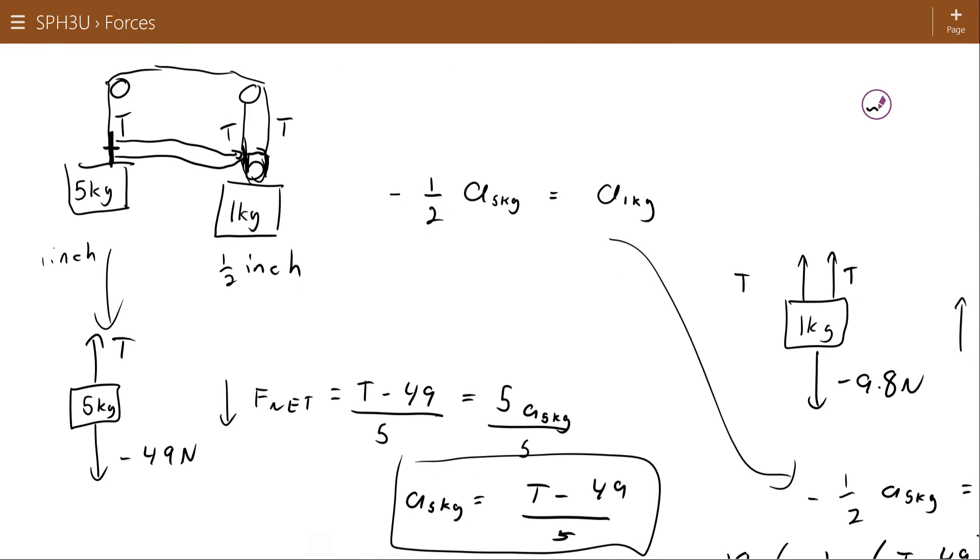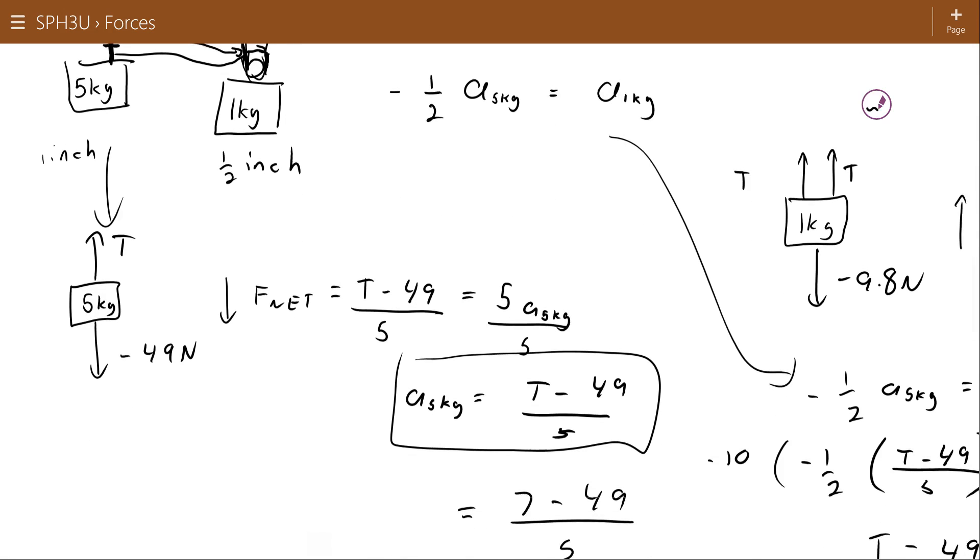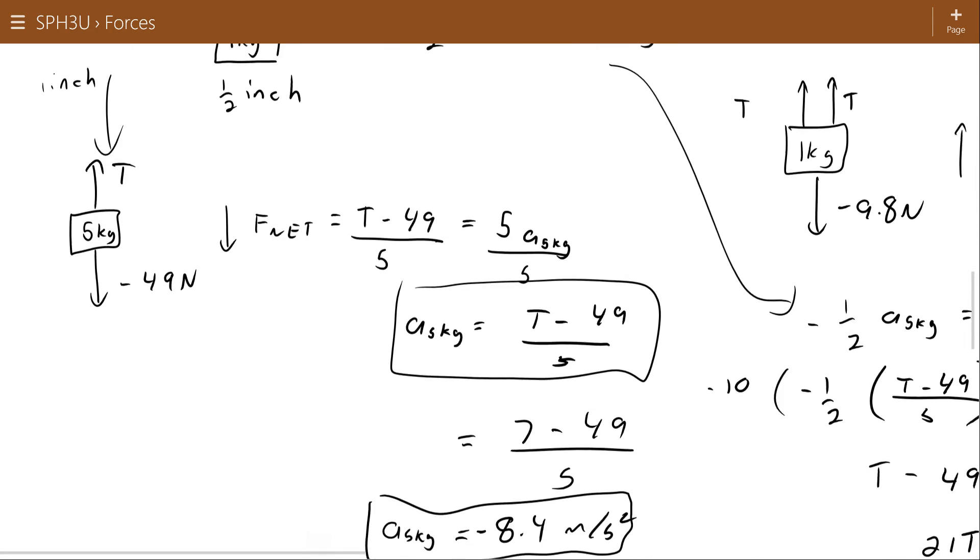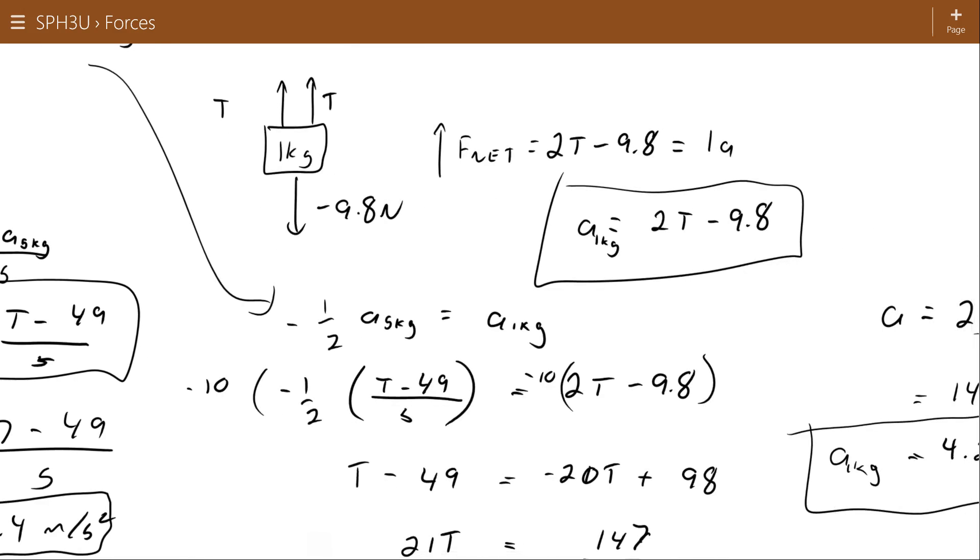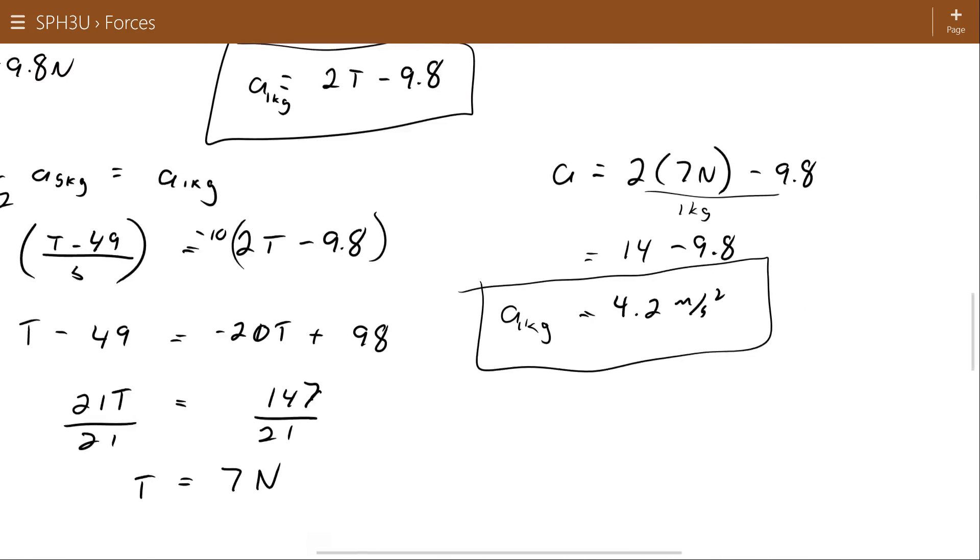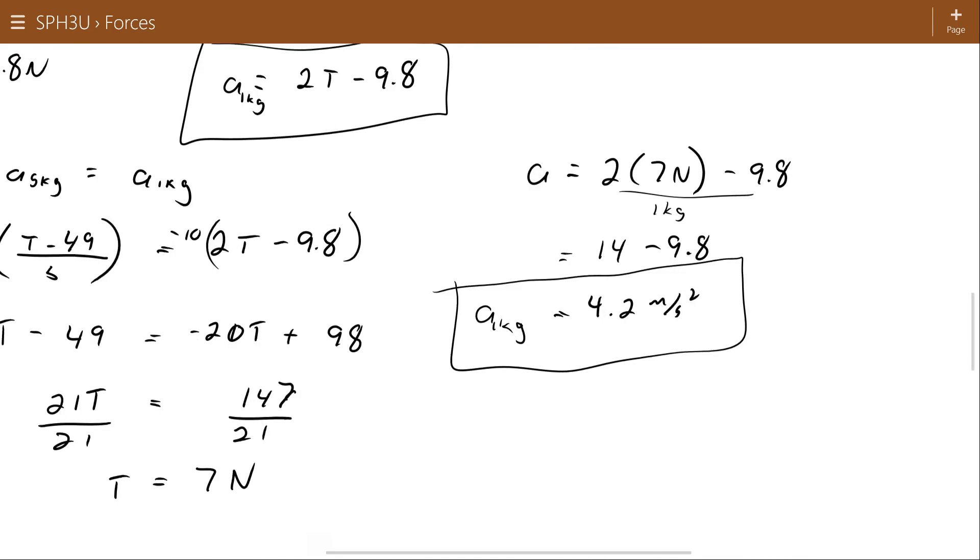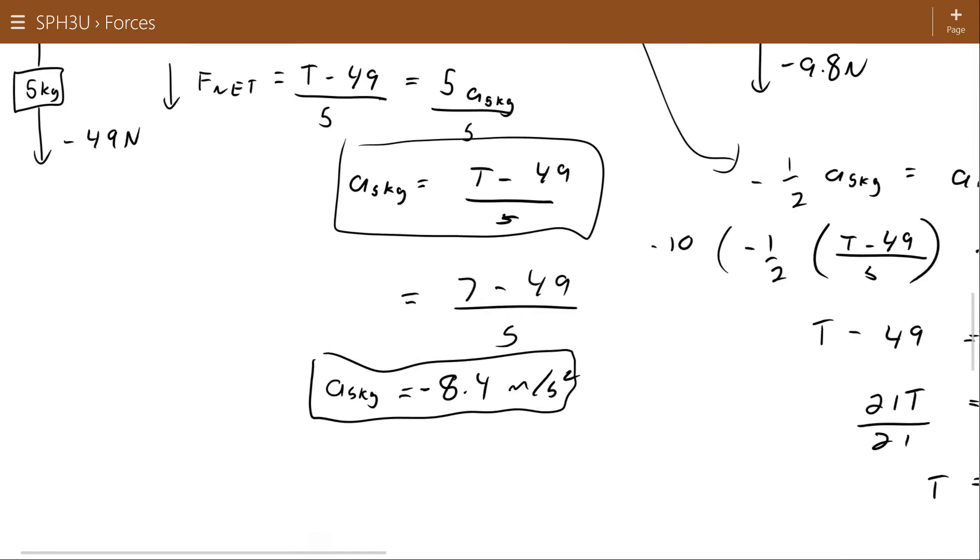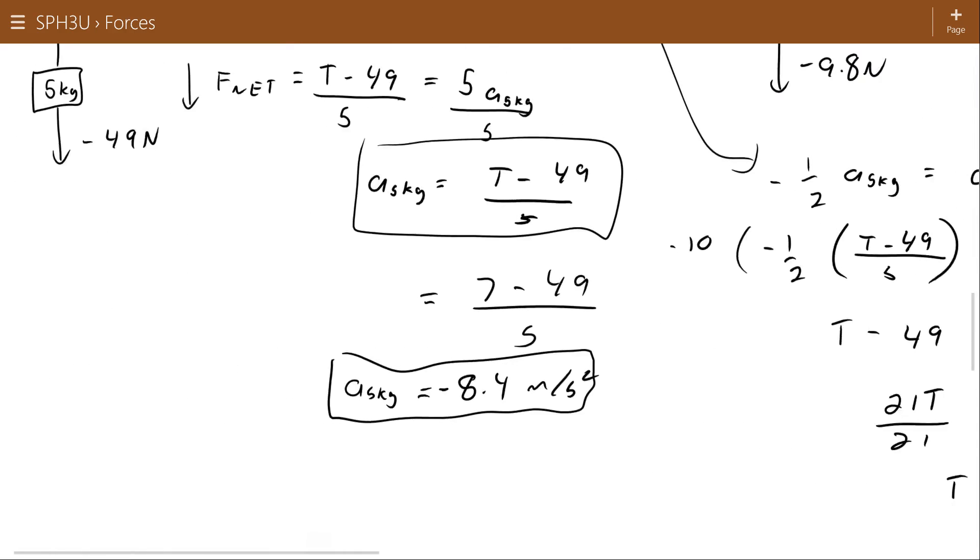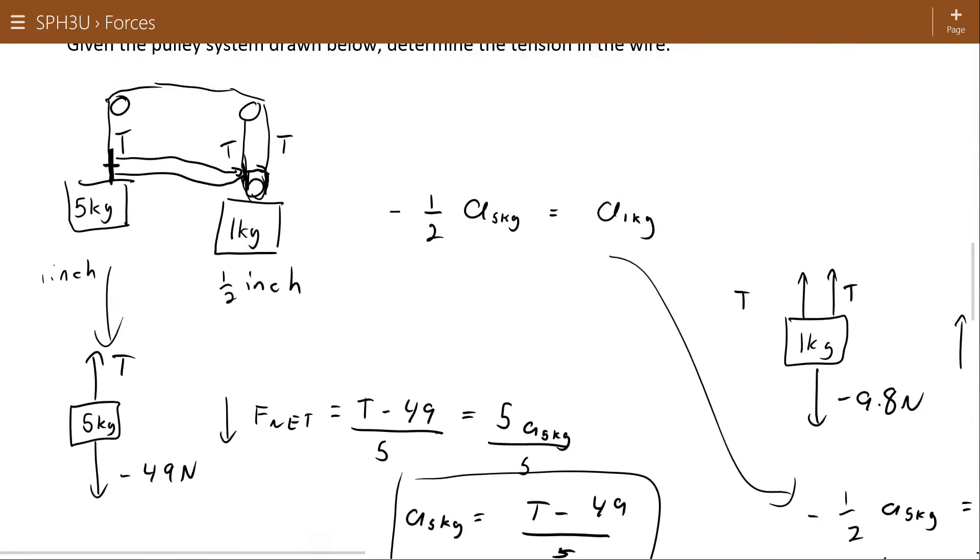So again, relate the two accelerations by recognizing that for every 1 inch, or 1 meter, or whatever you want to say, this moves, this one has to only move by half because of the double pulley line. Use the tension and the net force to come up with an equation for the accelerations of the 5 kilogram and 1 kilogram block. Then combine them all in one big equation, solve for tension, and then substitute back to find the accelerations of the individual blocks. So there's a pulley system question.